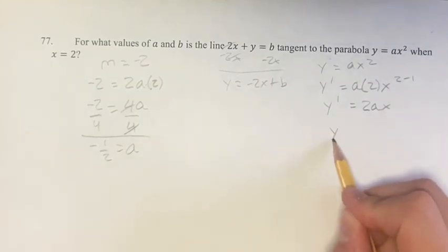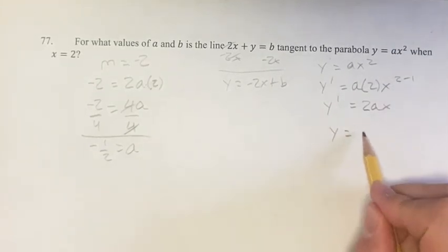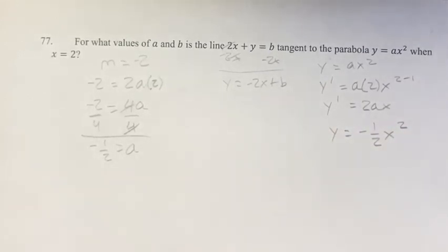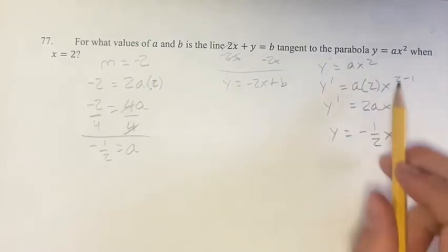So what does that give us? That gives us the equation y equals negative 1 half times x squared. So this gives us a. Now we're looking for b.